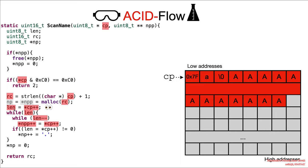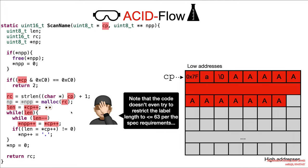What's really weird about this code is why was length determined here and determined here separately? It's really weird. The code doesn't even try to restrict the label length to less than 63 per the spec requirement.